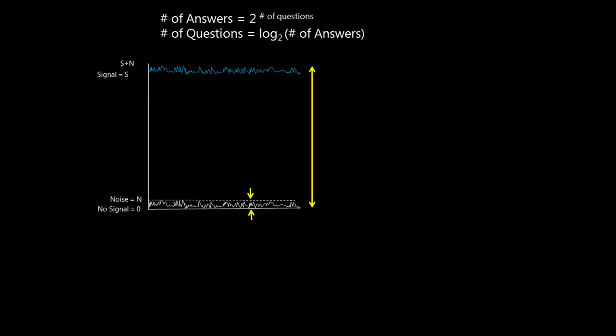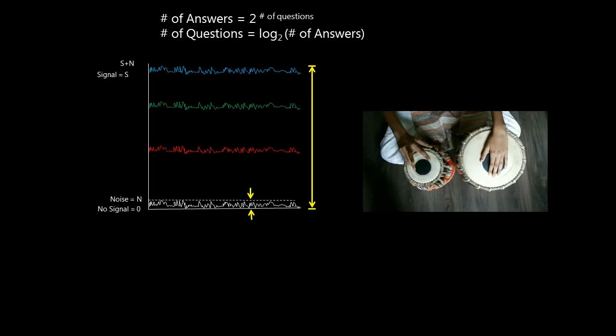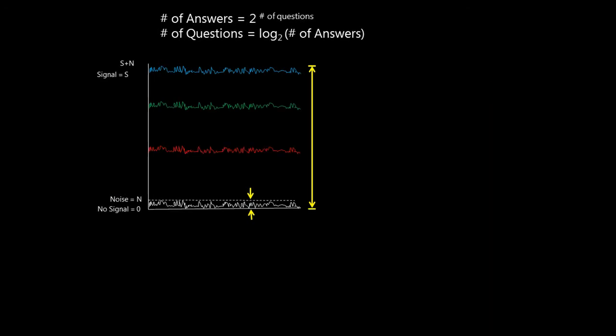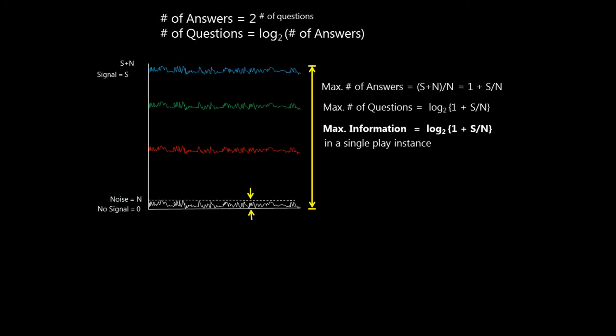In between, we can fit in additional sounds. Each of which is an answer to a yes or no question. For a noise band of width n, the maximum number of answers we can fit in would be (s + n) / n. Therefore, the maximum number of questions we can answer equals log base 2 of that. This is the maximum information that we can pack in a single instance.